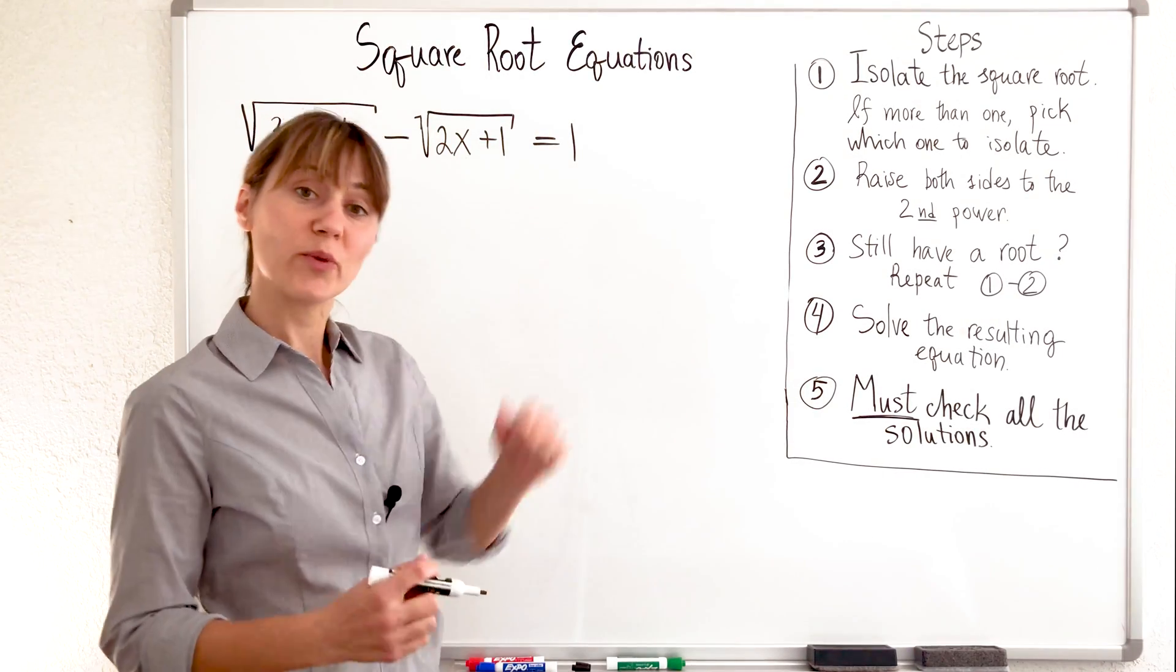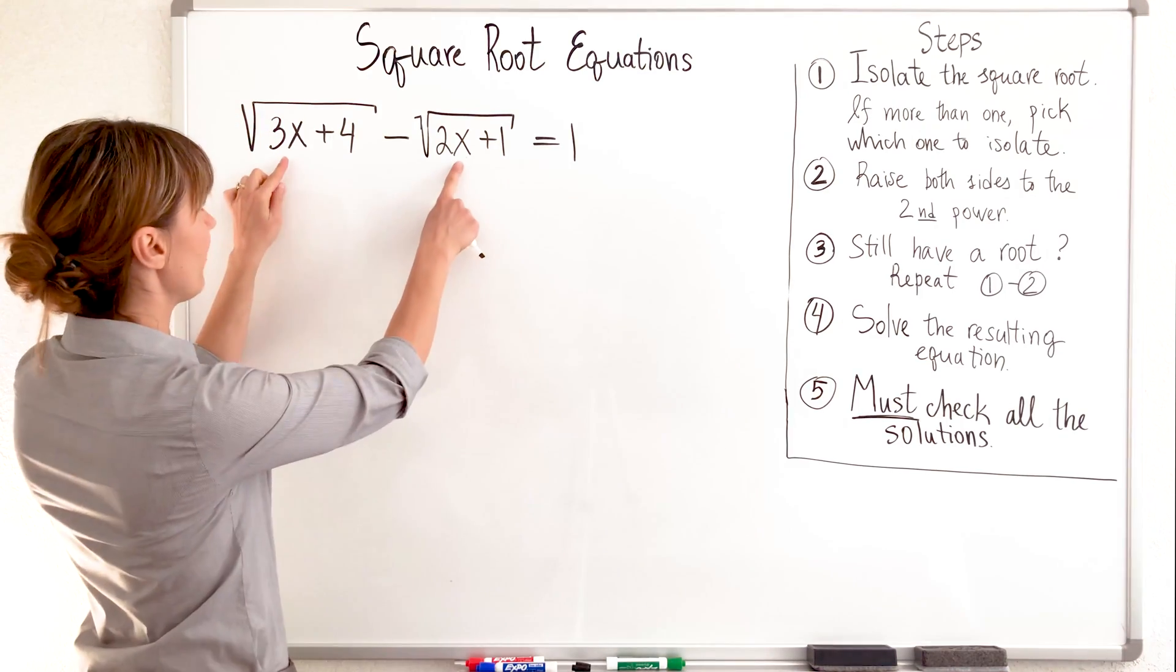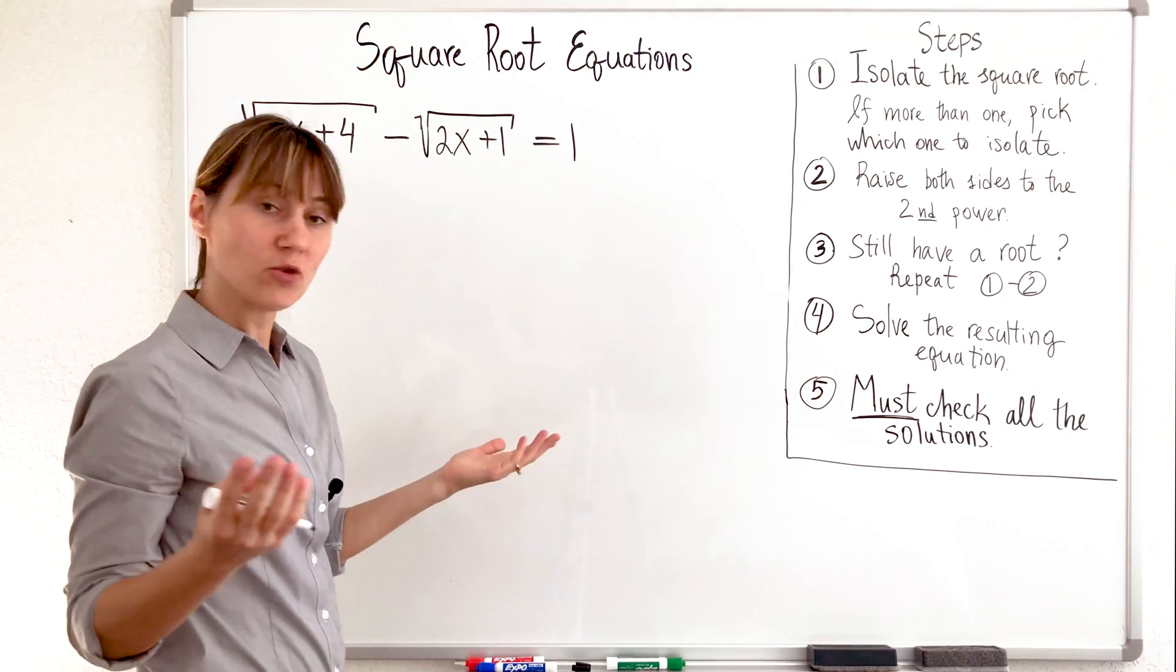I'm glad you are here and look what we've got. We have an equation with two square roots and our variable under each square root. What are we going to do?